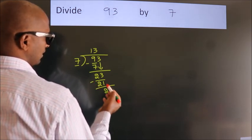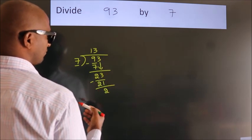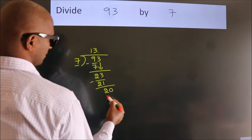After this, no more numbers to bring it down. So, what we do is, we put dot take 0. So, 20.